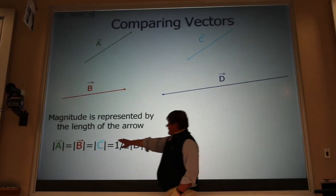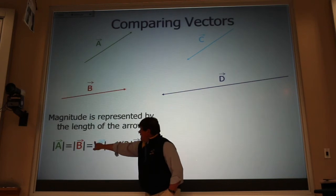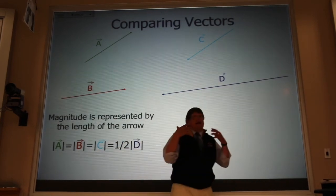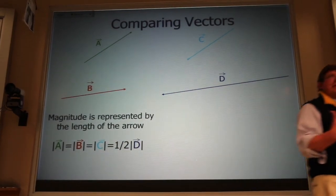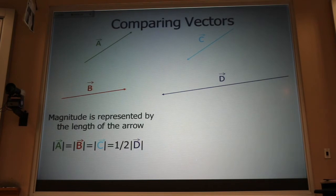Now, this arrow over here tells me that it's a vector quantity. The bars on the side indicate that I'm only interested in the magnitude, always a positive value, the strength. Okay. If it's a force, it would be how many pounds it is. If it was a velocity, it would be how many miles per hour. I hope this is boring to you.